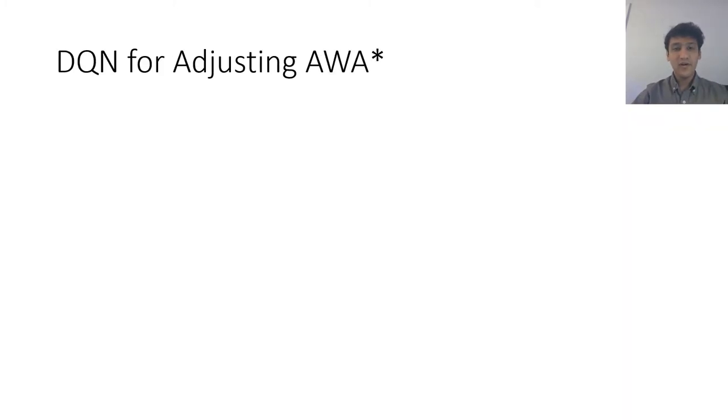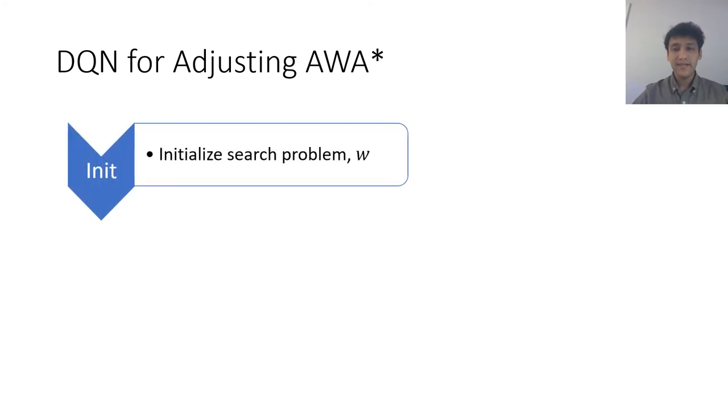Now let's see what a typical episode looks like when we apply the popular DQN algorithm for adjusting Anytime weighted A star. First you initialize the episode with a search problem and with a starting weight such as a weight of say 2.